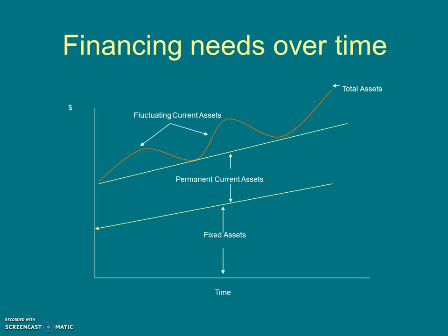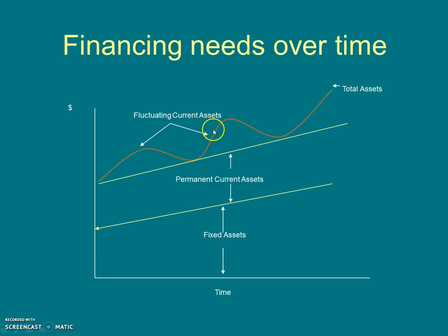Even if a firm has sufficient current assets, sometimes it also needs to finance some current assets. In this graph we can see the level of assets. The very bottom shows fixed assets, above that permanent current assets — which represents the minimum amount of working capital always required to run the business — and above that fluctuating or temporary current assets, which are required when demand increases or there are delays in receiving inventory. This represents the total current assets.